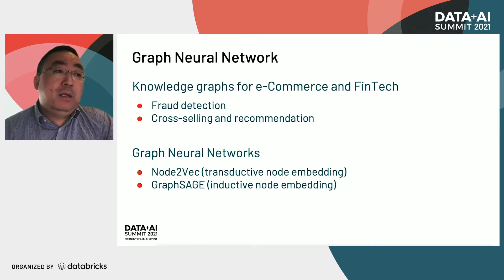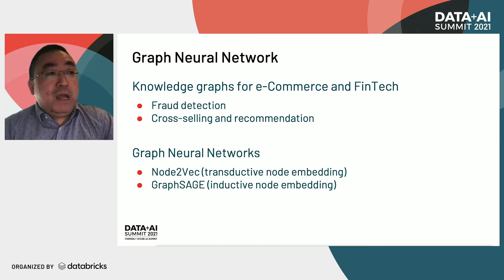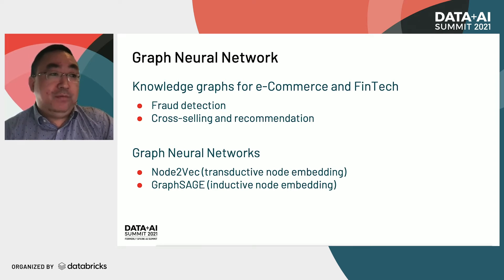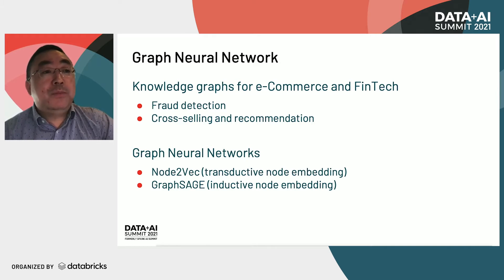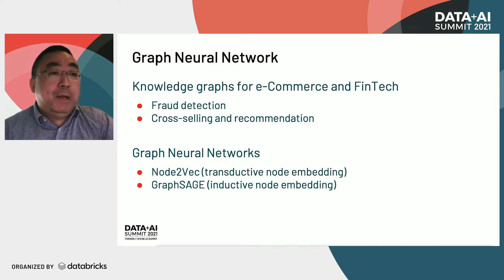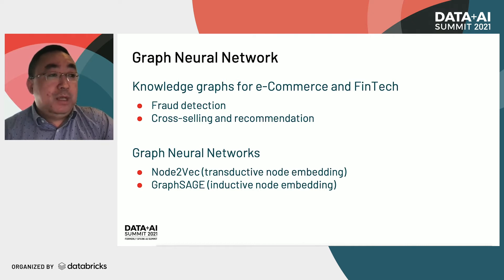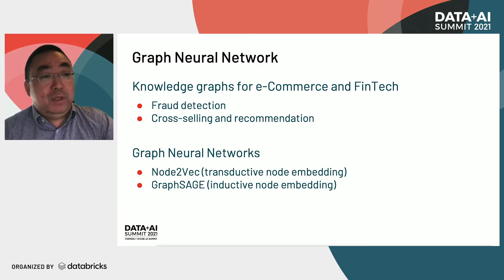On large-scale graphs, there has been a lot of research conducted using graph neural networks to solve critical business problems, especially in e-commerce and fintech. Some examples: fraud detection is very critical for e-commerce and fintech. The reason graph neural networks can help is that fraudsters tend to form a cluster in their activity graph. Another example is cross-selling recommendation — with node embedding, you can easily get item similarity and customer similarity from the graph embedding. There have been various graph neural networks published in the past few years. For example, node2vec is a transductive model embedding algorithm on relatively static graphs, and GraphSAGE is an inductive algorithm on dynamic graphs. We will focus on node2vec for its high popularity.